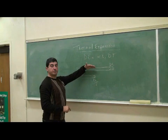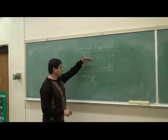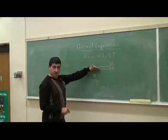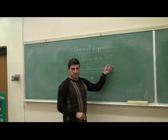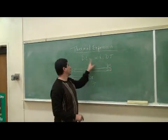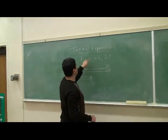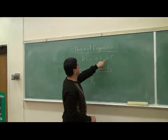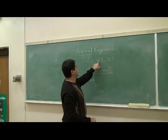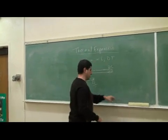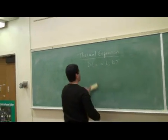And if I have another piece of metal that is twice as long as this, it will increase its length twice as much. So the change in length is proportional to the original length, the change in temperature delta T, and alpha, which is known as the coefficient of linear expansion.